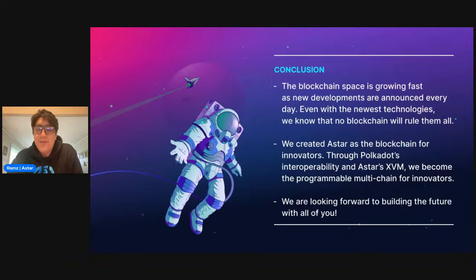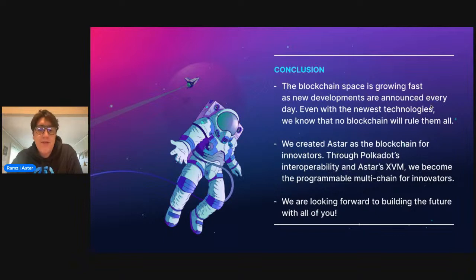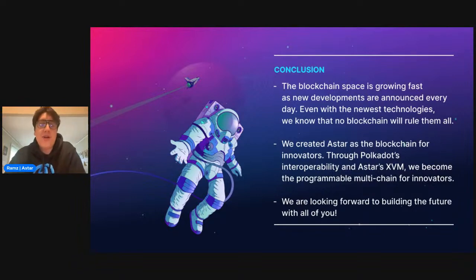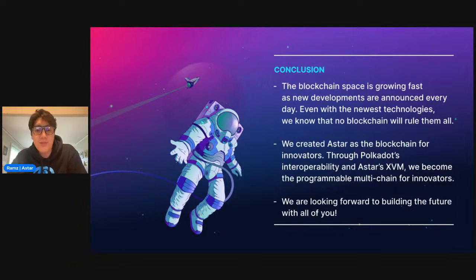The advantage of this interoperability is that developers can build in the languages they know — whether Rust in Polkadot or Solidity for EVM. They can still create tools similar to MetaMask or WalletConnect and still interact with WebAssembly smart contracts. Some of these tools can be ported over and start interacting with the Substrate architecture. The blockchain space is growing fast and not one blockchain will rule them all. We created Astar as a hub for developers and innovators — Polkadot's cross-chain messaging and Astar's cross virtual machine will hopefully facilitate all types of contracts and tools to interact and become truly interoperable.